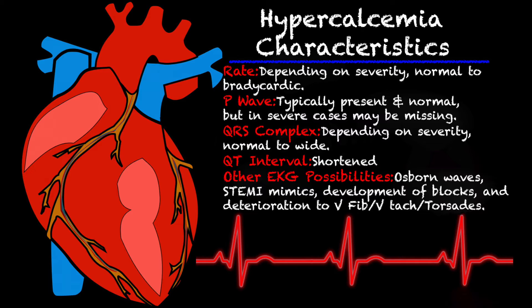So let's talk about some of the characteristics of hypercalcemia on an EKG. Your rate, depending on the severity, could be completely normal, but if it is very severe it could be bradycardic. Your P waves are typically present and upright, but in the most severe cases they may not even be present. Your QRS complexes could be normal to wide — the more severe it is, the wider they can become.